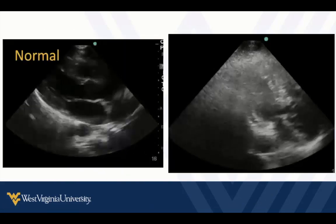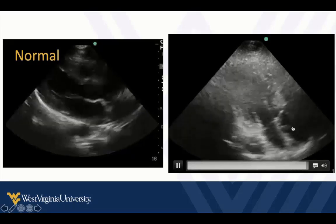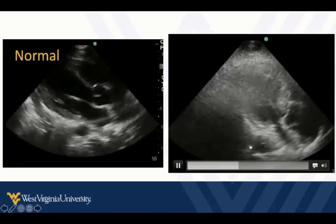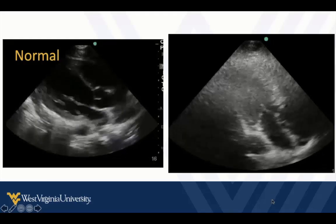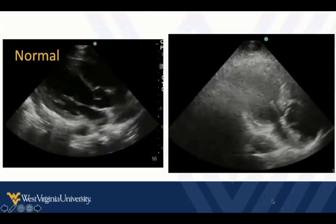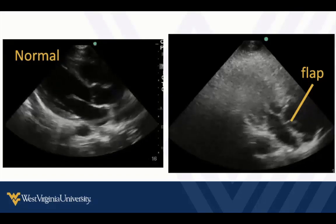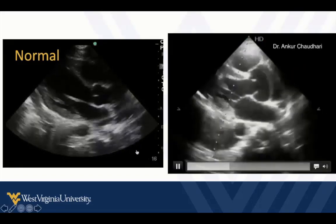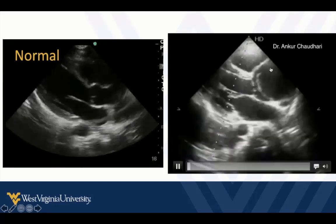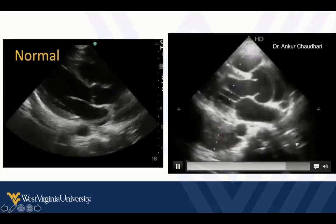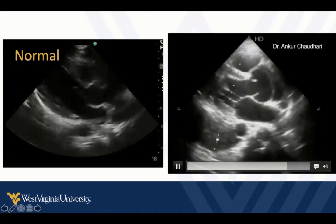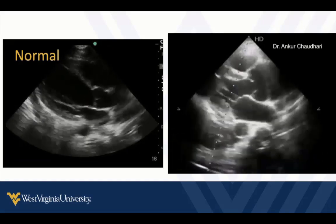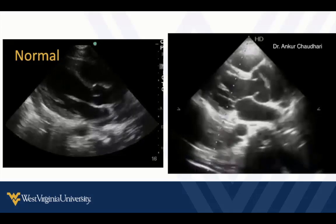Sometimes we may see a flap, shown here in comparison to a normal image. If we get our eyeballs on the descending thoracic aorta, we'll see the flap there as well. The aortic root is also dilated and we can see the flap in the descending aorta — very obvious dilated root with a flap. There's also a pleural effusion here going behind the descending thoracic aorta. If you're not using echocardiography in these patients, this is a diagnosis you're going to miss.